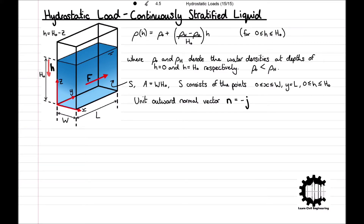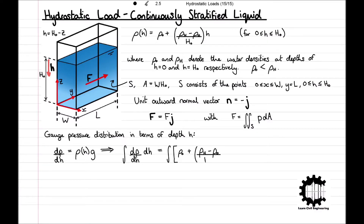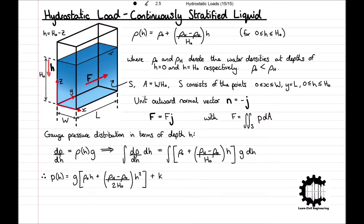Taking the equations from the introductory video, the hydrostatic force F = F·j with F equal to the surface integral of p dA. To find the gauge pressure distribution in terms of depth h, we use dp/dh = rho(h) × g, and integrate. Substituting the density distribution gives the integral of [rho_0 + (rho_h − rho_0)/h_0 × h] × g dh. Evaluating, the pressure at depth h is: p(h) = g × [rho_0·h + (rho_h − rho_0)/(2h_0) × h²] + k.